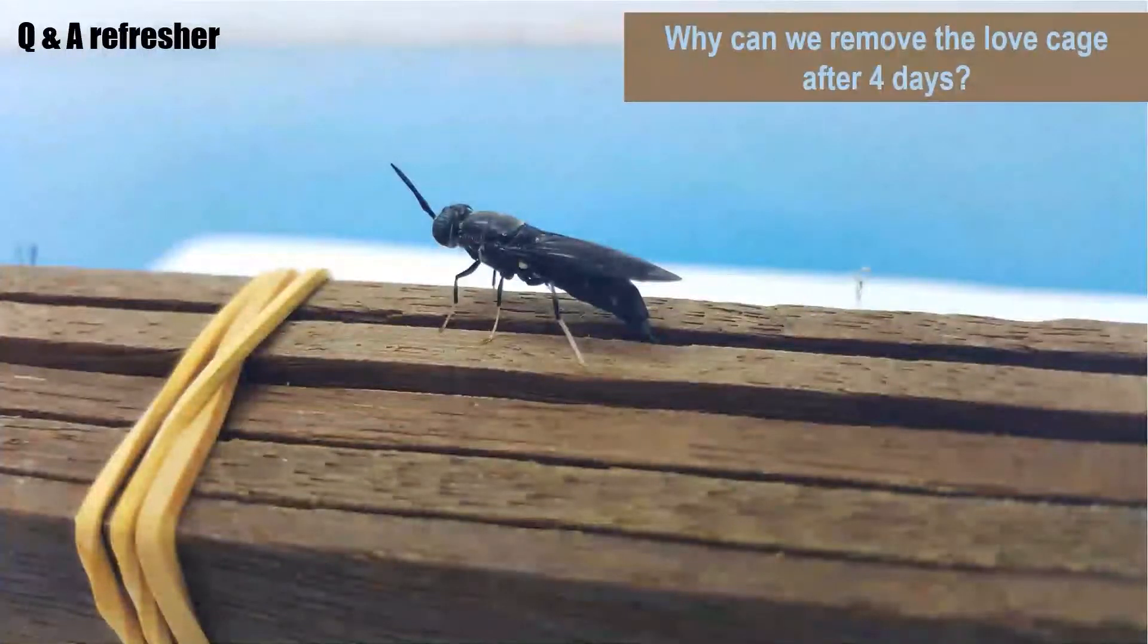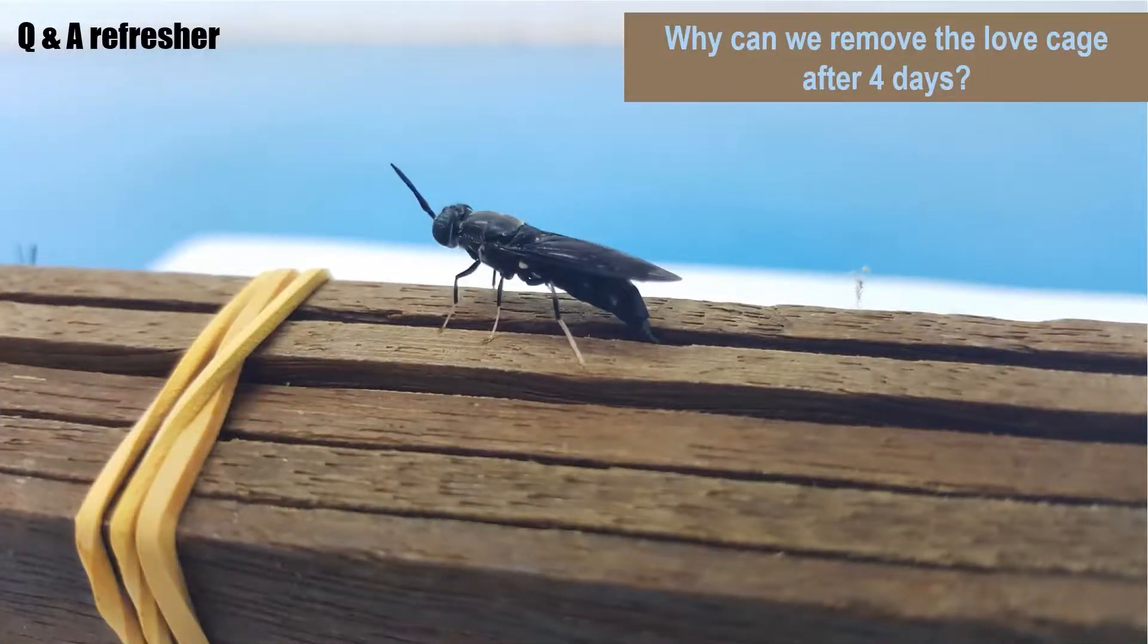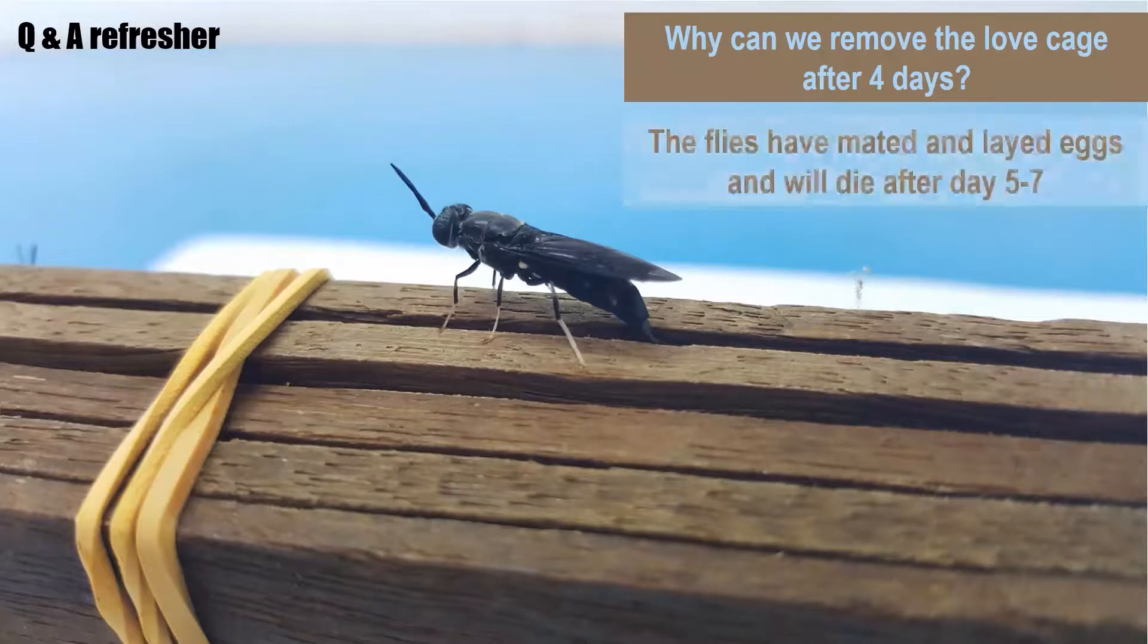Why can we remove the loft cage after only four days? This is because the flies have mated and laid eggs within these four days and they will die after five to seven days.